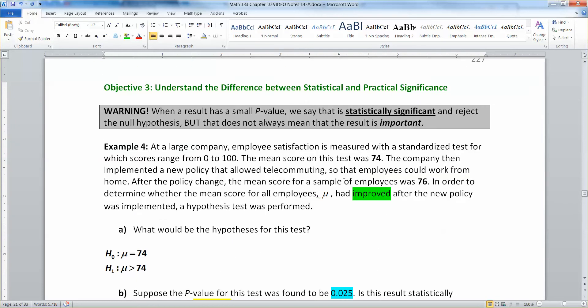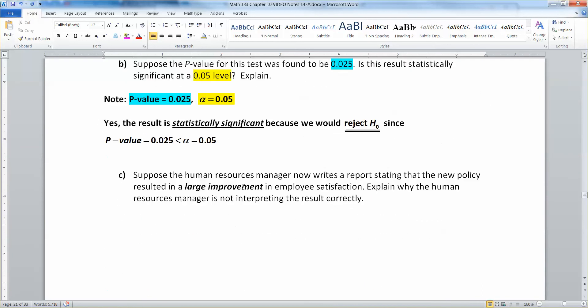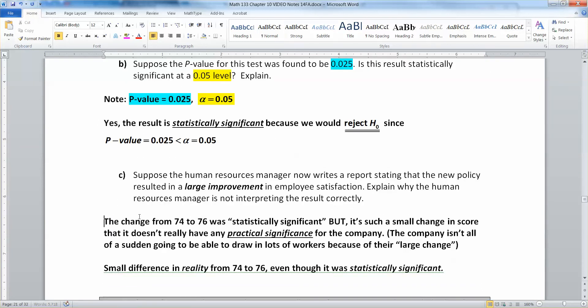Well, let's think about this. We went from 74 to 76. It's not like you all of a sudden turned your workplace into Google. You know, everybody's got slides and beach ball, volleyball for breaks. We don't have that. So we've improved it slightly. It was statistically significant. In other words, we were able to reject the null hypothesis. But it's such a small change in score that it doesn't really have any practical significance for the company.